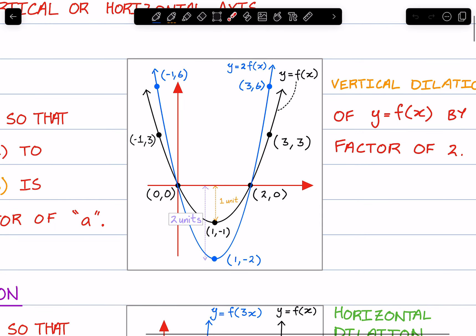When we dilate it, that distance is multiplied by a factor of 2. So its y value is now negative 2.